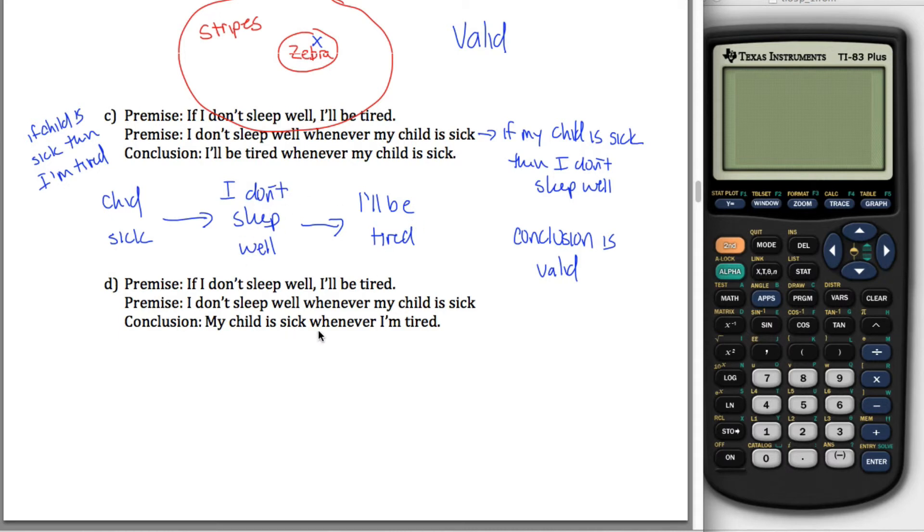And why is that valid or why is that not valid? Because there's no arrow from tired to sick in the above chain. I didn't bother rewriting this down here. You could rewrite it if you want. But note that tired does not imply child sick. Child sick implies tired. Maybe I'm tired because I went out last night or something. That doesn't necessarily mean my kid's sick. So that's not a valid conclusion.